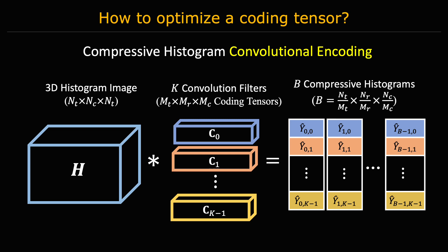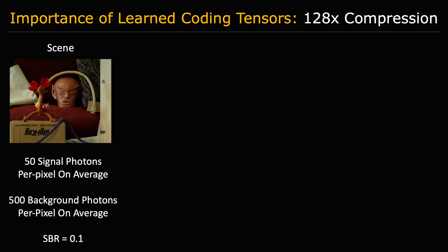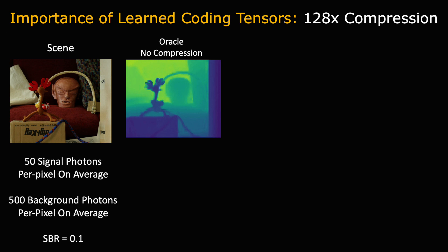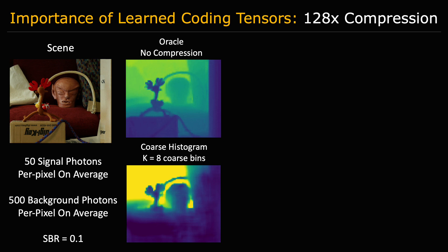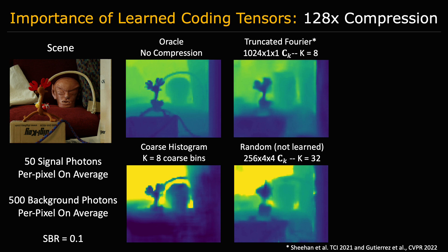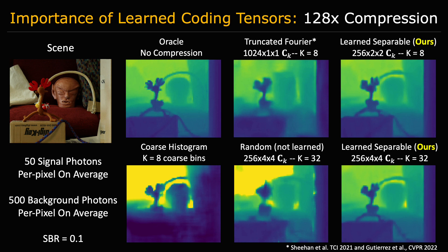Let's look now at the reconstruction results of the following scene. Using a high-resolution histogram leads to a high-quality reconstruction but requires storing and transferring the full histogram tensor. A coarse histogram introduces severe quantization artifacts which are smoothed by the denoising neural network. Using a hand-designed coding tensor or a random one leads to better reconstructions than a coarse histogram but continue to be low-quality. Finally, the learned coding tensors achieve reconstructions that are comparable in quality to the no-compression oracle.